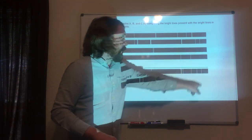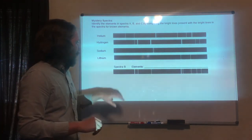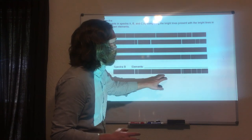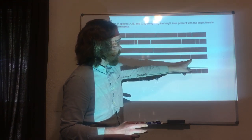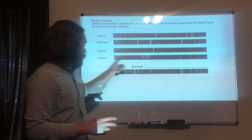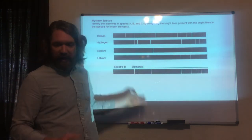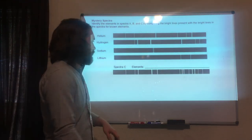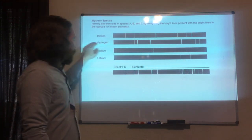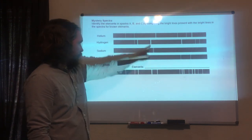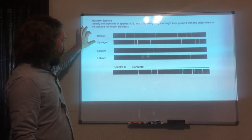Let's do it again. We have two lines here — those appear in hydrogen. Checking: one, two, three — all the lines in hydrogen are there, so hydrogen is in the gas. What else? There's another line — that matches lithium. So that's hydrogen and lithium. Last one: two lines at the end — that's hydrogen again. Plus one line all by itself — that means helium. So that mystery gas is hydrogen and helium.